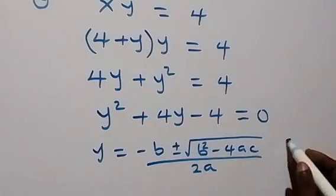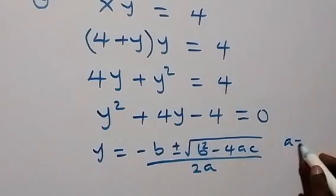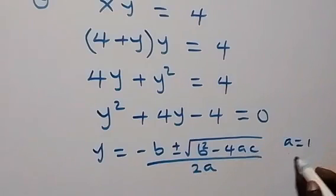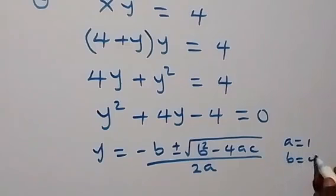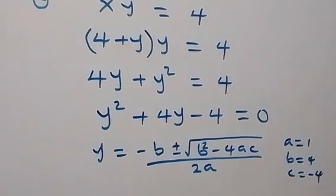Then here we can substitute the values. We have a equal to 1, b equals to 4, and c equals to minus 4.